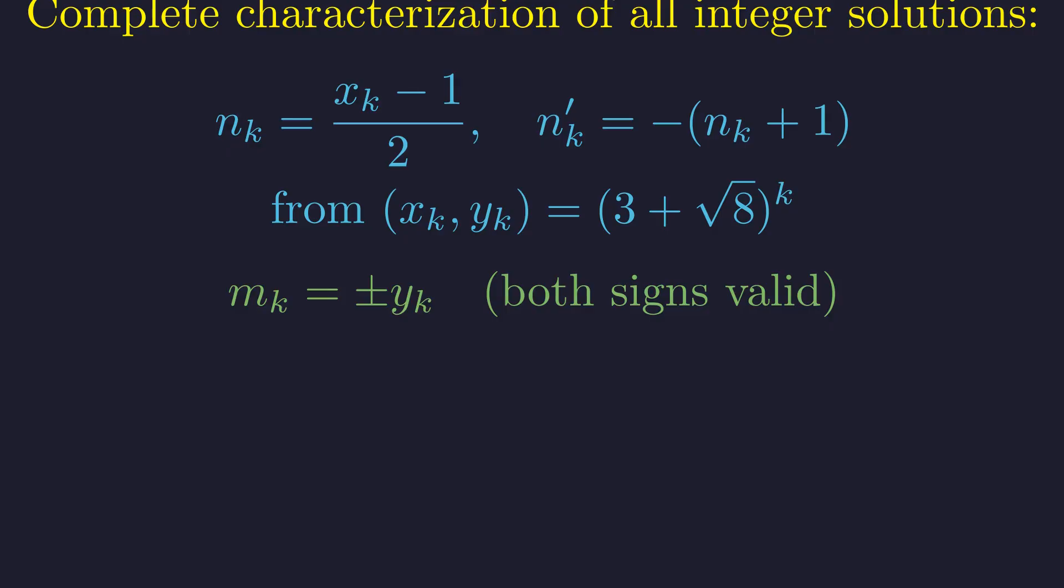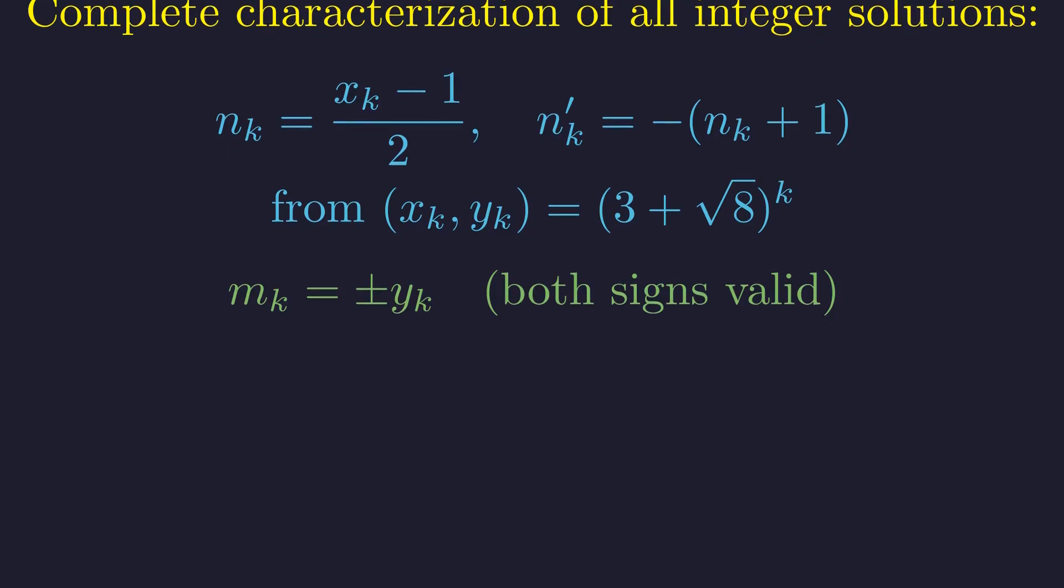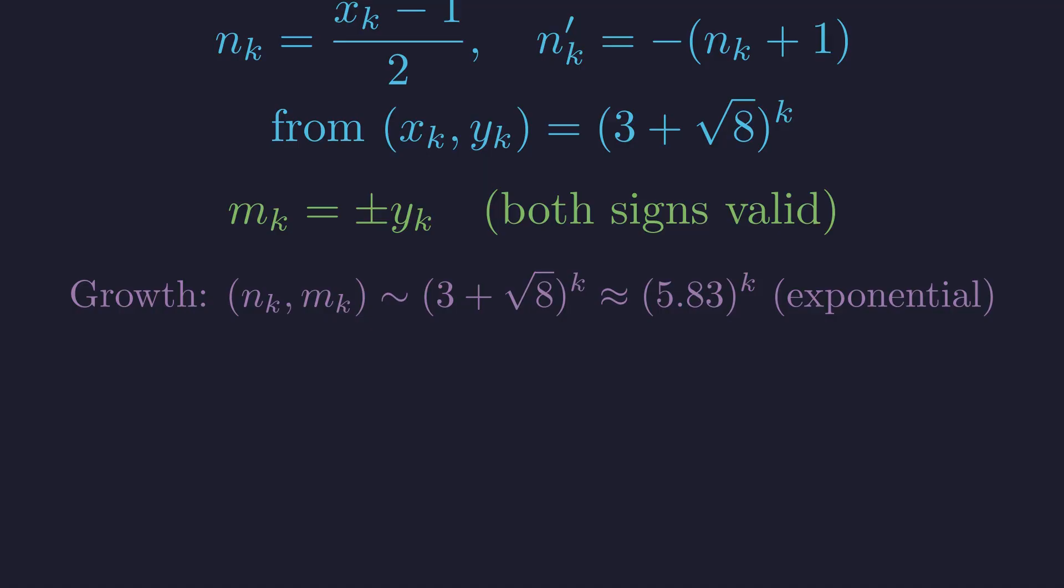For each solution, m can be positive or negative, giving us the complete family. The solutions grow exponentially, with consecutive pairs approximately multiplied by 5.83. From a simple question emerges infinite complexity and profound mathematical beauty.